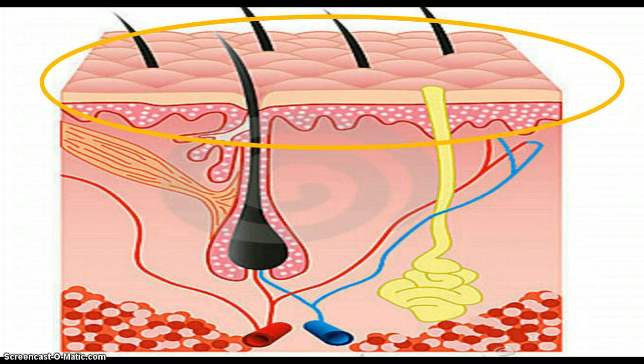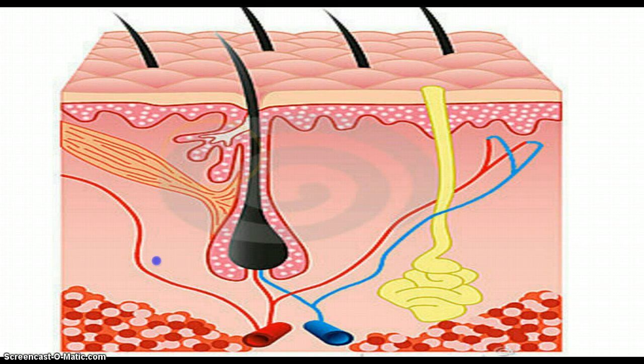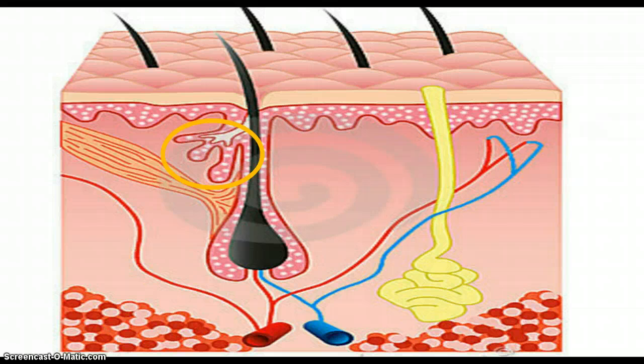Next, we have the sebaceous glands. They are microscopic glands in the skin that secrete oil called sebum, which lubricates and waterproofs the skin and also the hair, protecting you. It's found mostly on the face and scalp, not on the palms and soles.